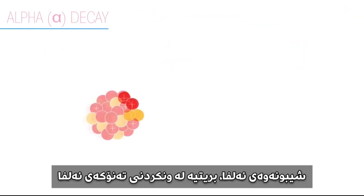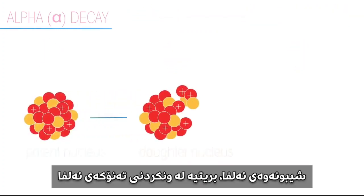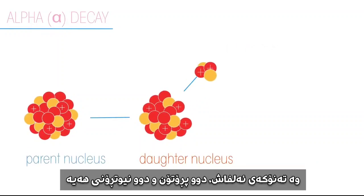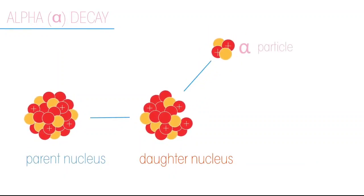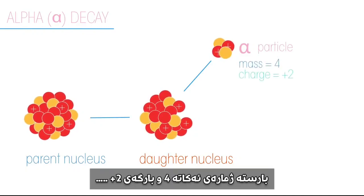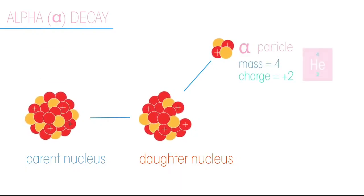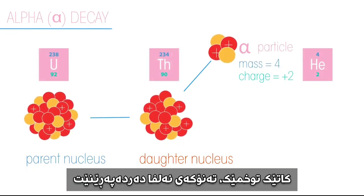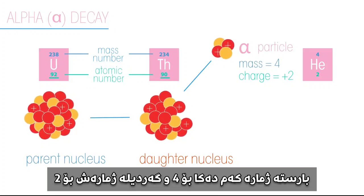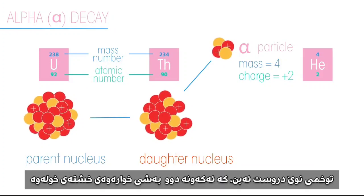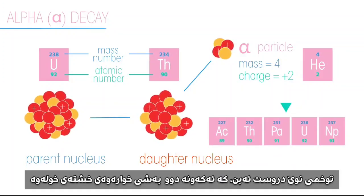Alpha decay is the loss of an alpha particle. An alpha particle is made of two neutrons and two protons. They have a mass of four and a charge of plus two. When an atom loses an alpha particle, the mass number decreases by four and the atomic number decreases by two. A new element is formed that is two places lower in the periodic table.